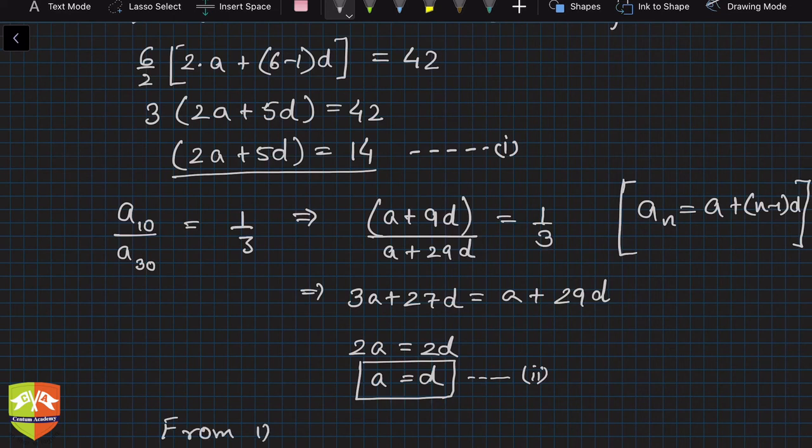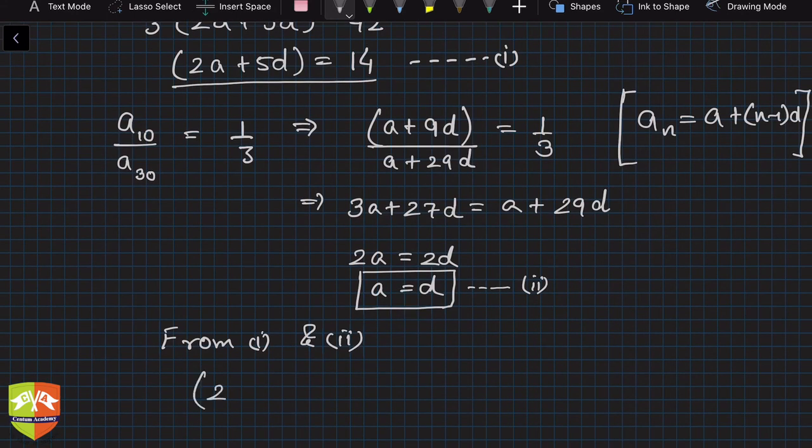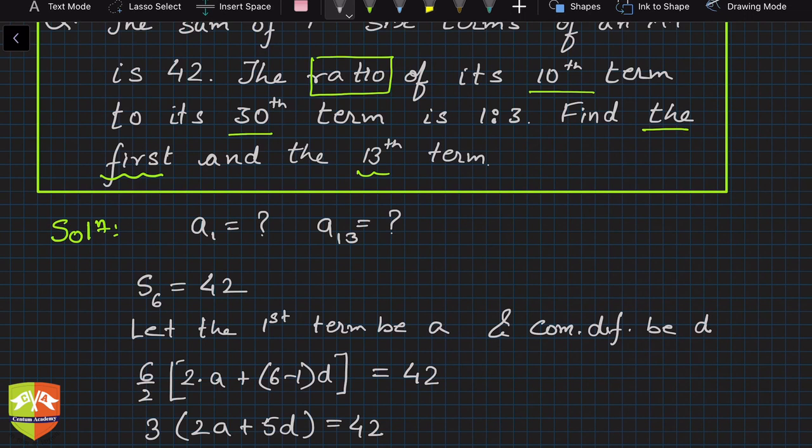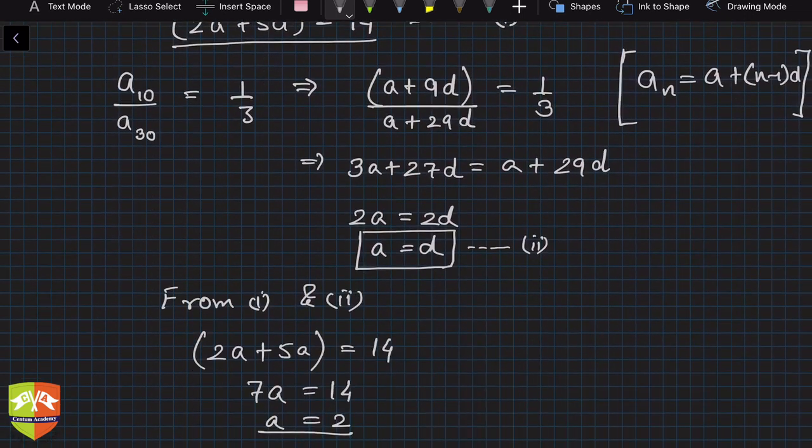From equations one and two, what can you say? You can say 2a plus 5a, because d is a, equals 14. So 7a is 14, so a is equal to 2. Very easy. a is equal to 2. What was the objective? To find first term and a₁₃. So first term is now known: a₁ is equal to 2. First is done.